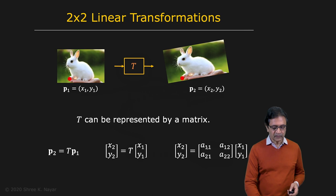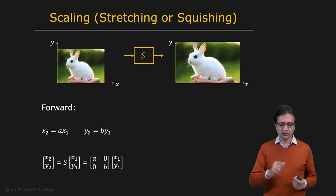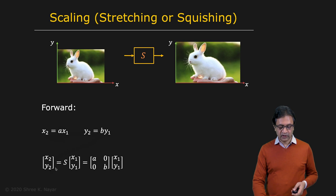So let's start with scaling. Let's say you wanted to stretch an image or squish an image. So, for example, if you have X2 equal to A times X1, where A is your scaling and Y2 is equal to B times Y1. Then you can write this again in matrix form as X2, Y2 equal to a matrix S, S for scaling, times X1, Y1. And here in this case, S is A, 0, 0, B, where this is A here, your scaling coefficient and B, another scaling coefficient.